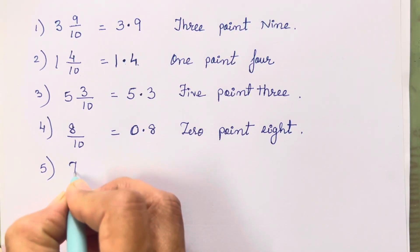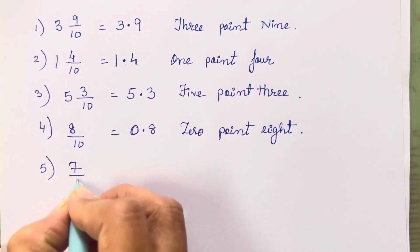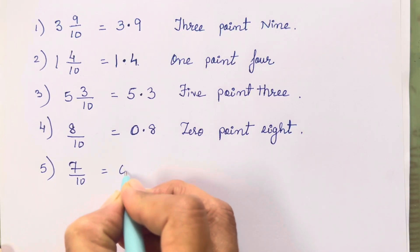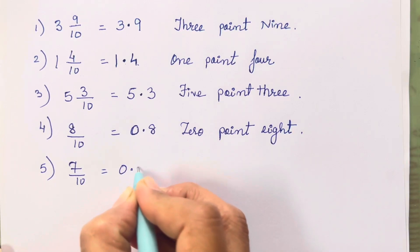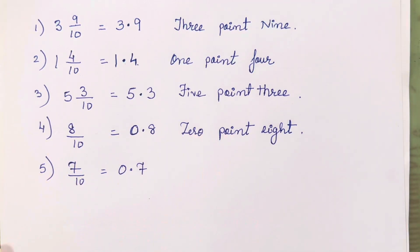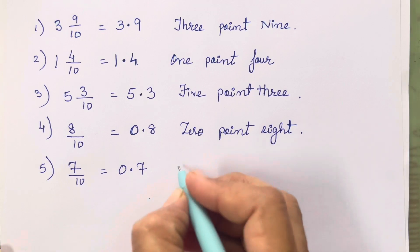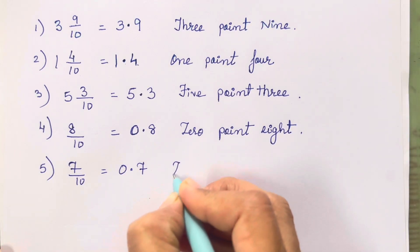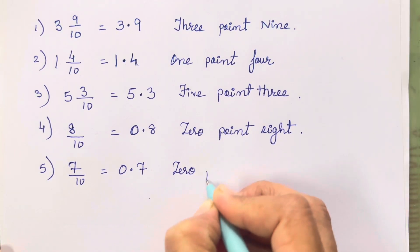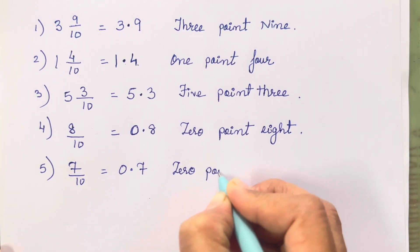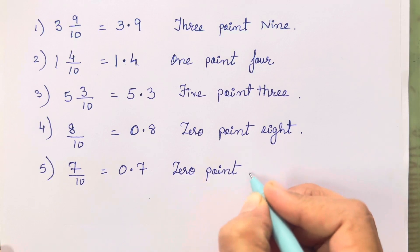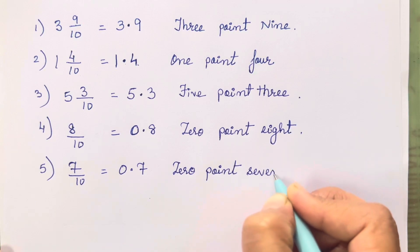The 5th one is 7/10. So 0.7 — same method. The way you are going to read it is the same way you all have to write it: 0.7.